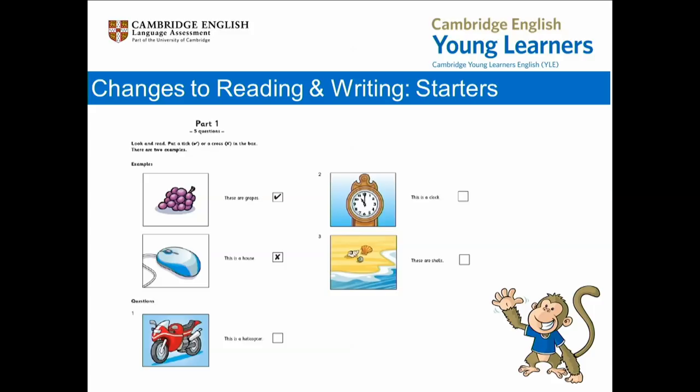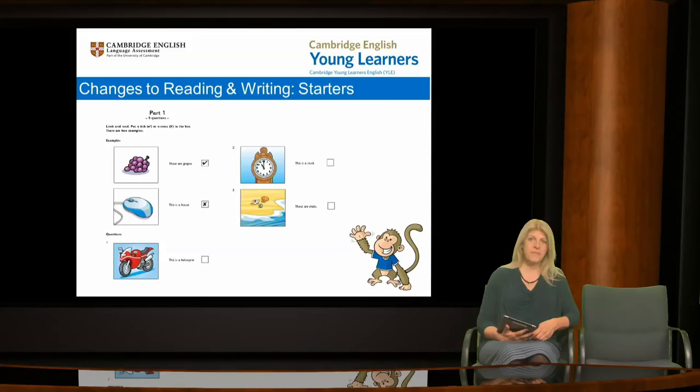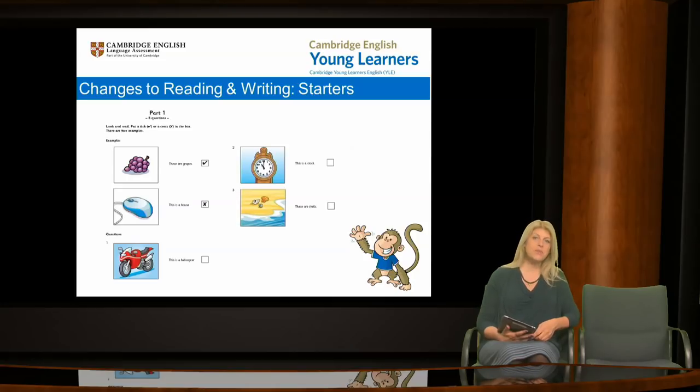However, there is one difference: the task now includes both singular and plural nouns, which involve the use of 'this is a' and 'these are' in the questions. In the example question here, we have 'these are grapes' and 'this is a house.' In fact, this change provides in some questions a further clue to candidates. This change is intended to allow for more variety of language to be used in this part of the test in a natural and appropriate way.